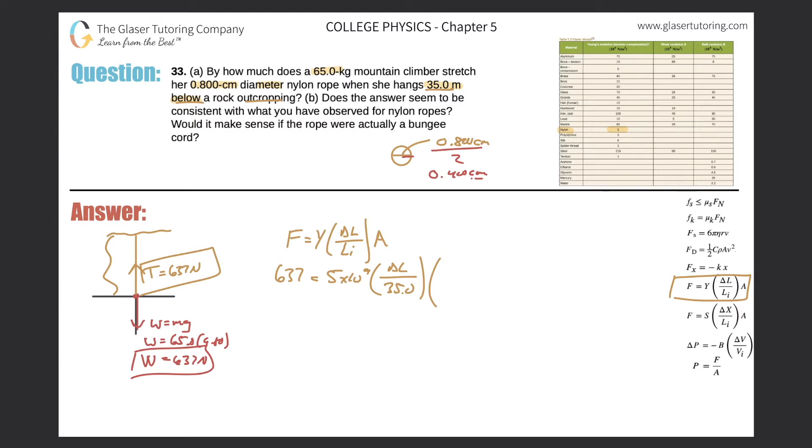How do we convert from centimeters to meters? Well, you can simply divide by 100, or simply just move the decimal point two places to the left, and if we do that we would get a value of 0.00400 meters.